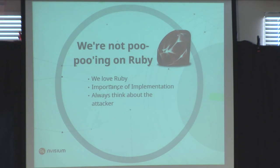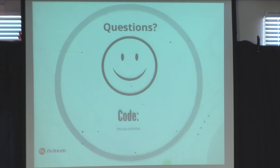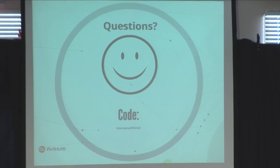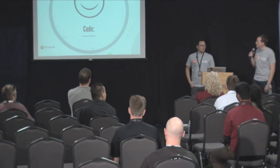We're not criticizing Ruby — we love Ruby. We just feel there's a huge importance to implementation. Because it's such a powerful language that lets you rewrite so many methods and really opens the door to do whatever you want, you always have to think about how an attacker might look at your application. Keep security in the back of your mind when spinning up apps. That's pretty much it — we're right at 30 minutes and have time for questions.